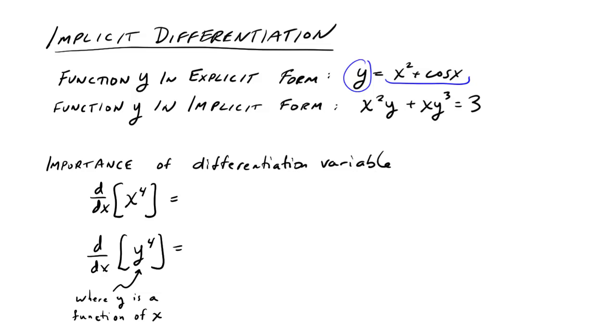We could have the function y in an implicit form. We're still thinking of the function y as a function of x, but the y is implicitly defined in there. The equation we're going to use to define the function is not expressed explicitly as y equals just x or functions involving x. The y is now mixed in.